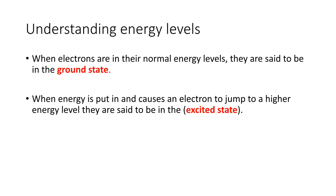When energy is put in causing an electron to jump to a higher shell, you say it's excited. For example, with lithium, you have two electrons in the first shell and one in the second shell. Excited state means one of those electrons jumps up to a third shell temporarily. It still has the correct number of electrons, but now it's at a higher energy level. That's what excited state means — the electron is taken from where it was and put in a higher shell. It will eventually come back down.